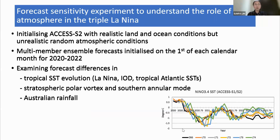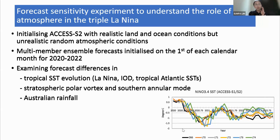This experiment is to understand the role of the atmosphere in the last triple La Niña from 2020 to 2022. The experiment design is to initialize XSS2 with realistic ocean conditions, but randomized atmosphere and land conditions. The original proposal was to initialize forecasts on the first of each calendar month from January to December 2020, but we decided to initialize every second month to reduce the data size.